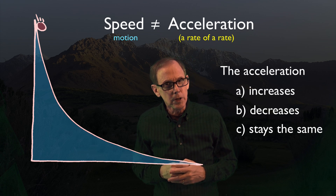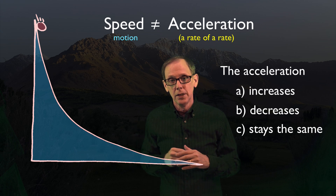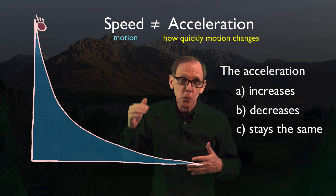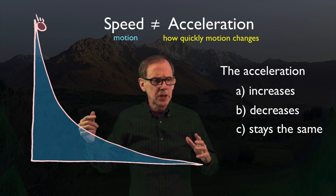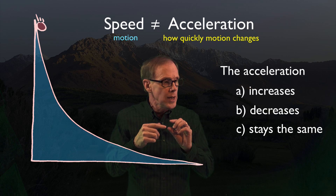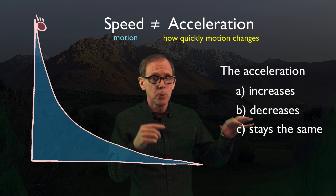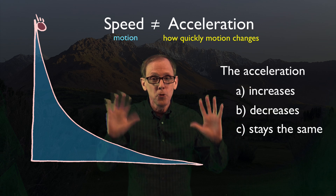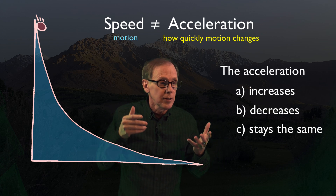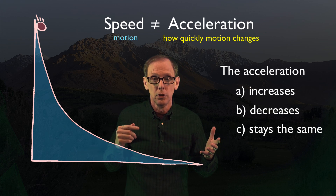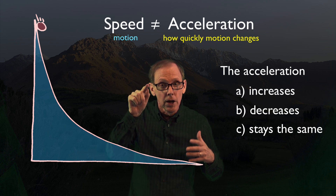But what about its acceleration? Acceleration is much more complicated. Acceleration is how quickly you change how quickly you move. Imagine you're moving along at 60 miles per hour, and then at 60 miles per hour, and then at 60 miles per hour. What's your change in motion? There's no change, and because there's no change, there's no acceleration. Acceleration is a measure of the change in motion. If you go from 60 miles per hour to 70 miles per hour to 80 miles per hour, you are accelerating.